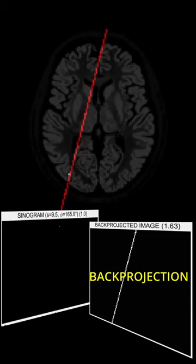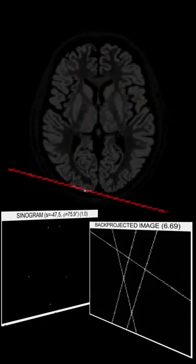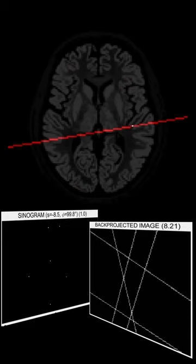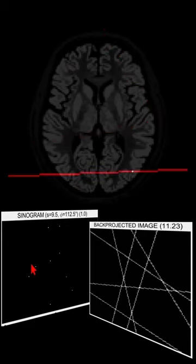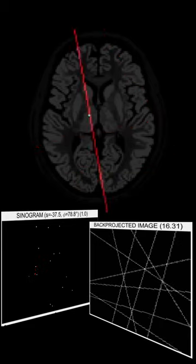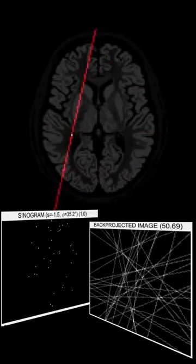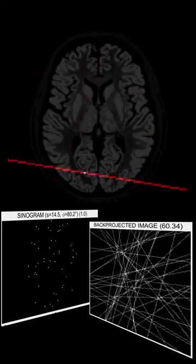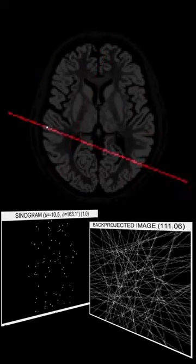Here I'm just back projecting the event. We can keep going with more and more events — we get multiple events in the sinogram, multiple back projected events. Now you can see I've got about 50 different positron-electron annihilations and back-to-back photon pairs.